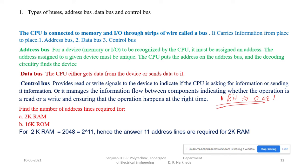One bit of information may be an on switch or an off switch, logic high or logic low. One kilobyte equals 2 to the power 10, which is equal to 1024. One byte is equal to 8 bits. So one kilobyte equals 2 to the power 10, that is 1024 bytes.